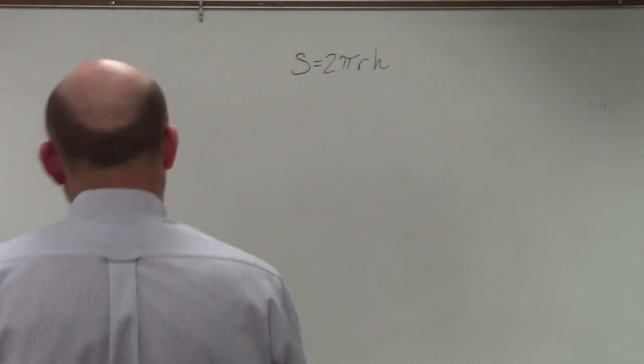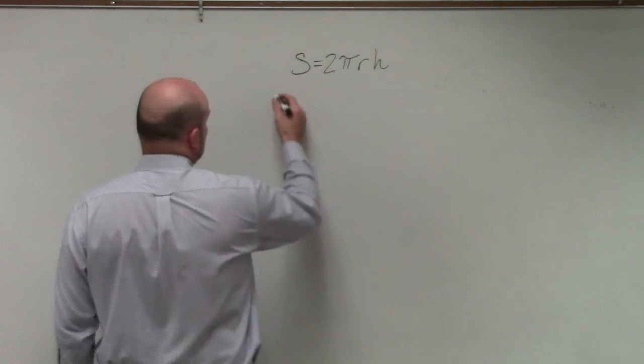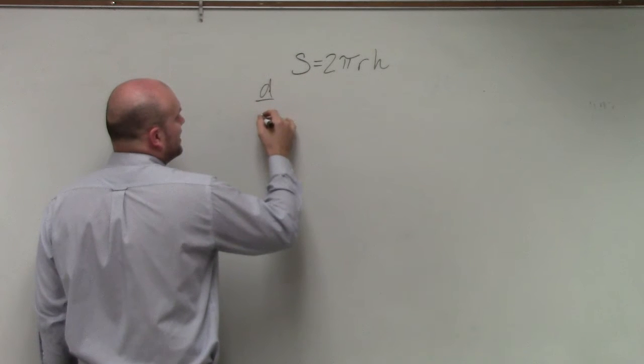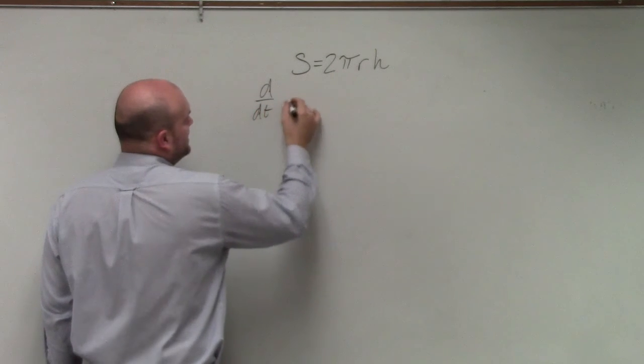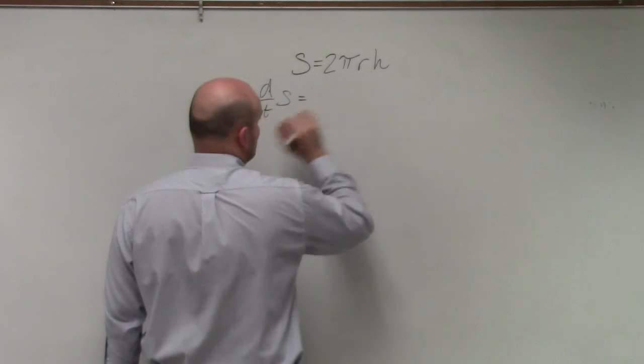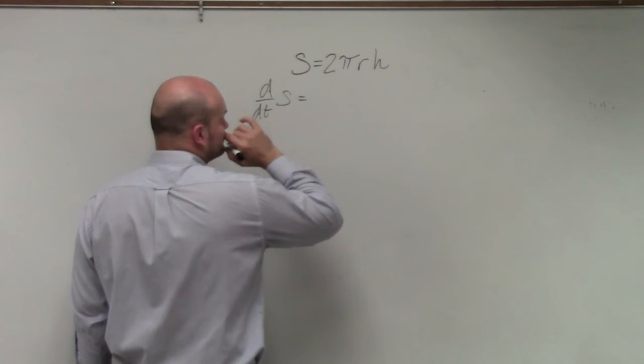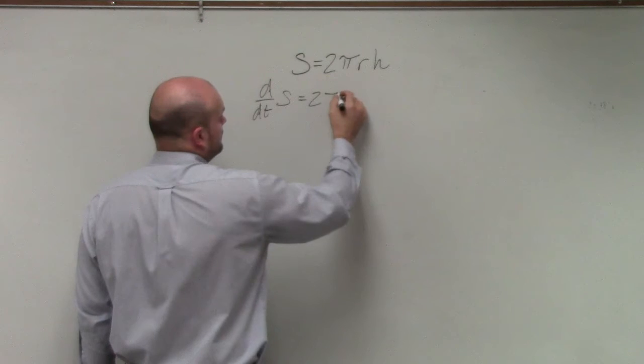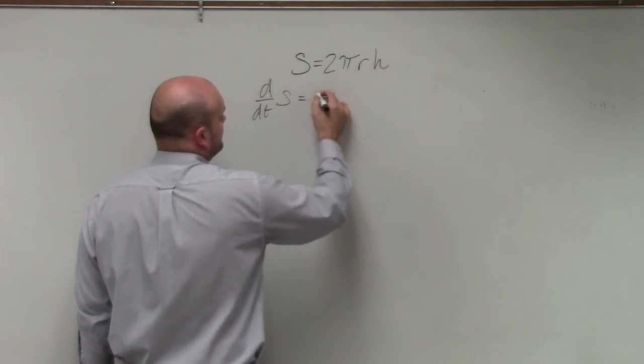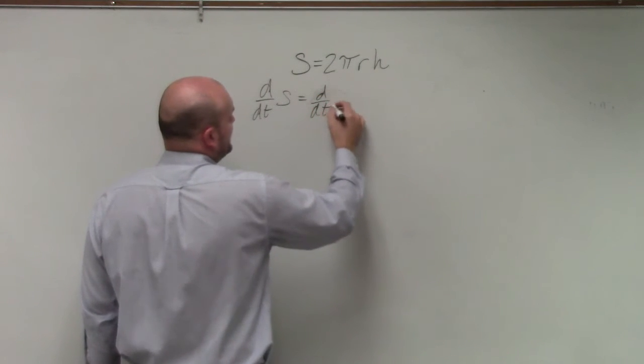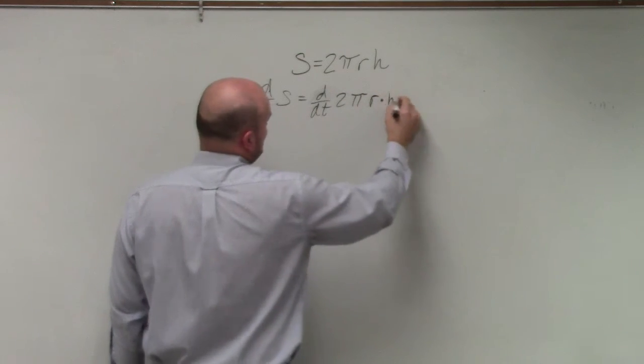Last example, s equals 2πrh. So with respect to d over dt of s equals, here you guys can see that I have d over dt of 2πr times h.